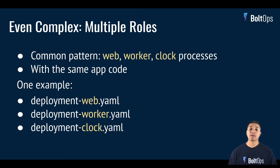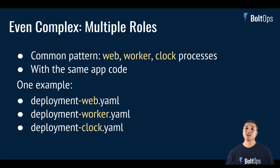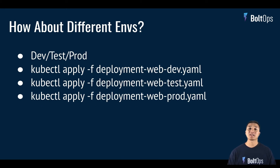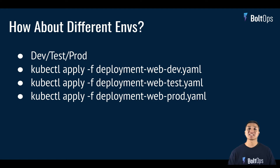We haven't even talked about multiple roles yet. A common pattern is that people deploy the same app code but start different processes — like a web process, a worker, or a clock process. One way to handle this is to have deployment-web.yml, deployment-worker.yml, and deployment-clock.yml — three different deployments for three different processes, but with lots of duplication where essentially the only difference is the start command for the Docker container. And we haven't even talked about different environments yet, which is a pretty common requirement. People usually want a dev environment, a prod environment, maybe a test or UAT environment. Now you see the permutation just increasing — you're going to have massive duplication everywhere. This is kind of where you end up when using kubectl directly.